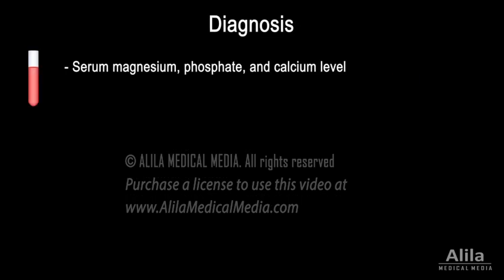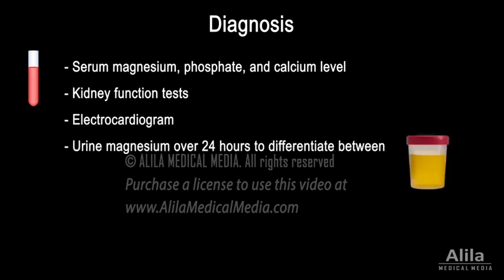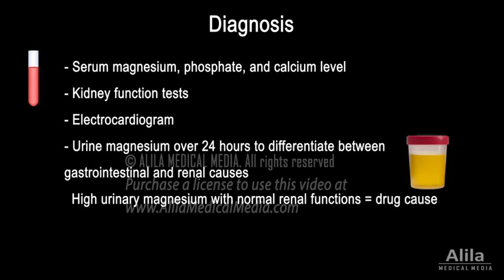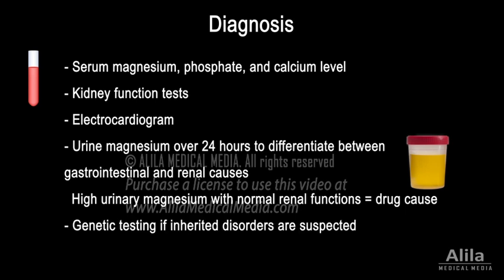Diagnostic tests typically include blood work for serum magnesium and other electrolytes, kidney function tests, and electrocardiogram. Urine magnesium over 24 hours can be measured to differentiate between gastrointestinal and renal causes. A high urinary magnesium excretion in patients with normal renal function may signify a drug cause. Genetic testing may be done if inherited disorders are suspected.